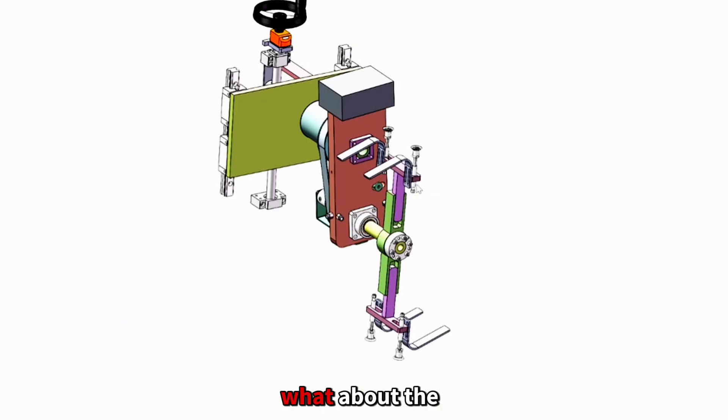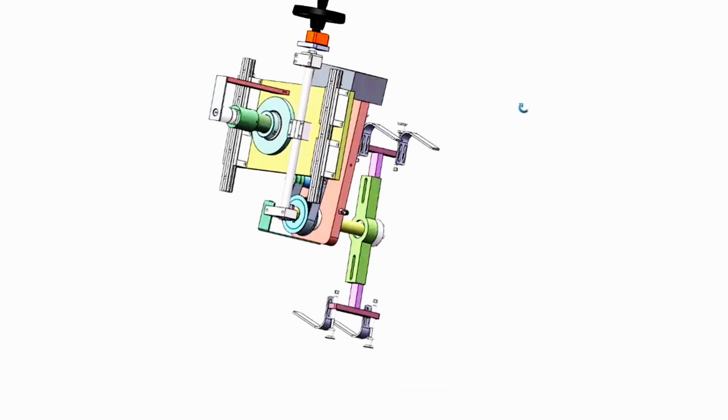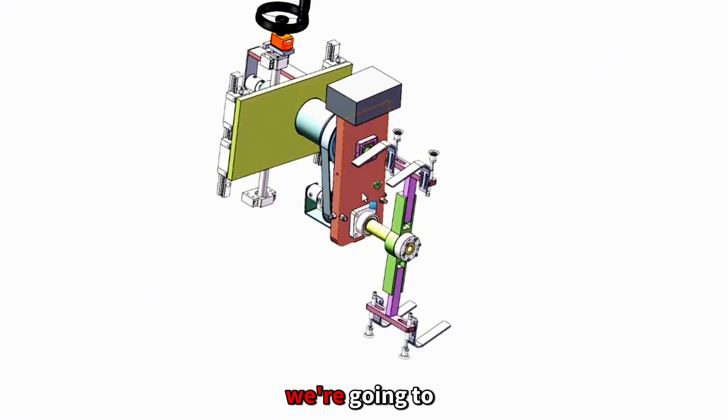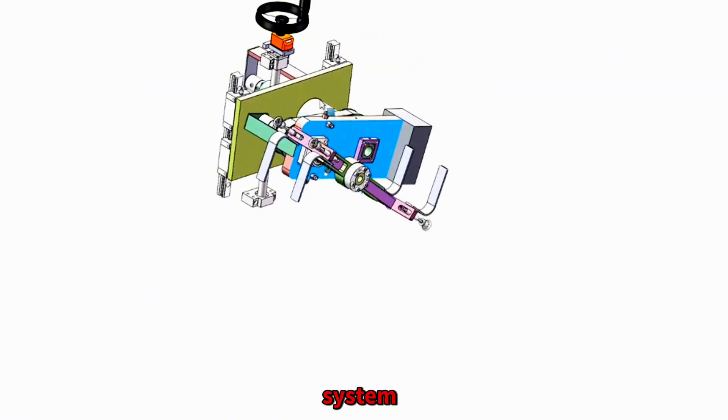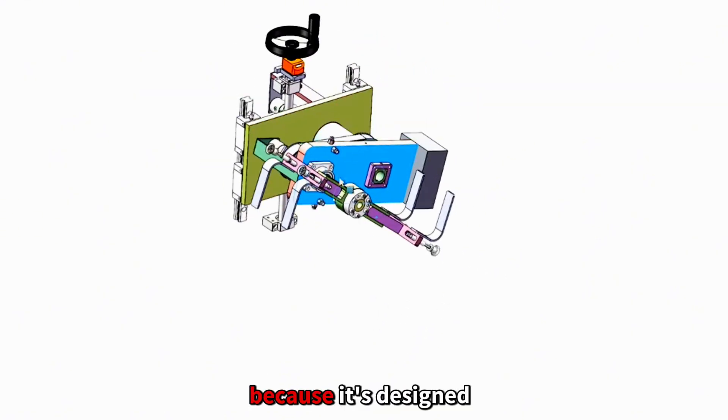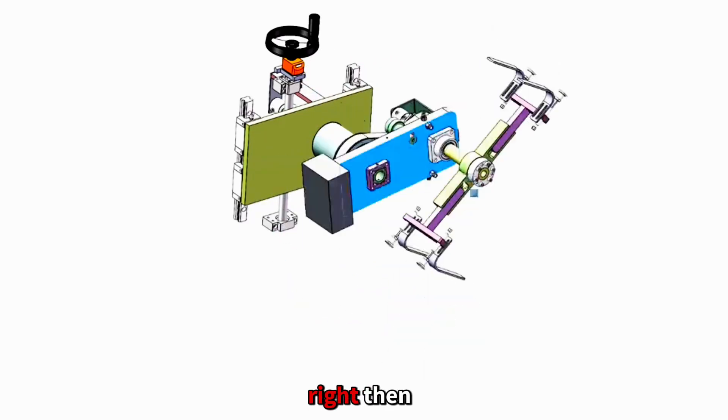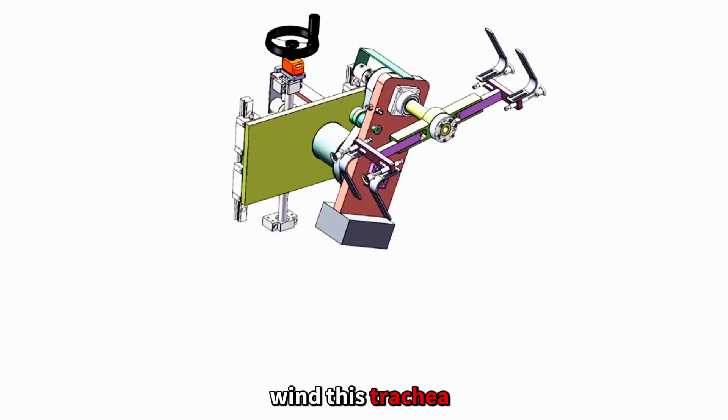Here we go. What about the second difficulty? It's this one that's spinning. We're going to use this suction cup to co-system. Because it's designed for both rotation and revolution, right? Then how do you wind this trachea?